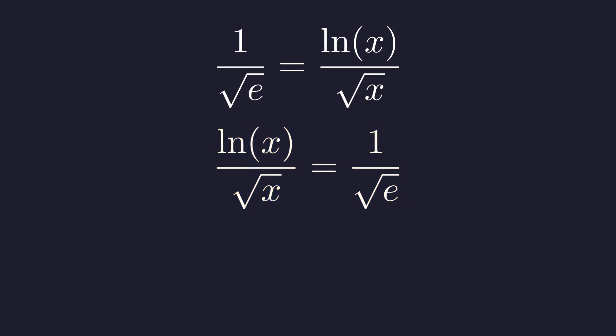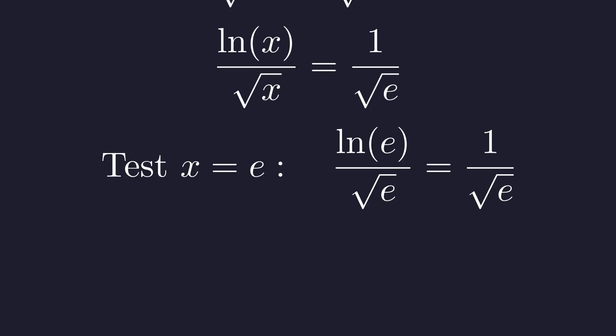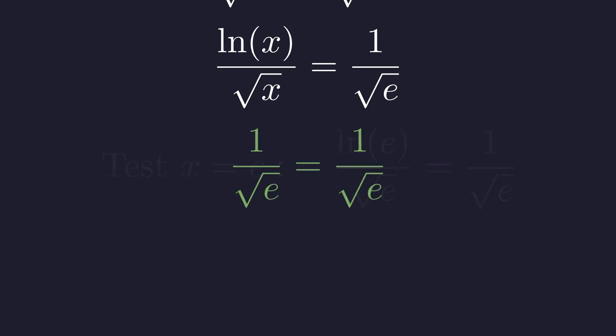Flipping the equation for clarity, we have our final analytical form. Observe the structural parallel: the form of the left side mirrors the form of the right. This strongly suggests that x equals e is a solution. Let's formally verify this by substituting e for x. The natural log of e is 1, which confirms the identity. Thus, x equals e is a valid solution.